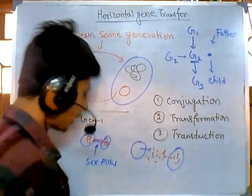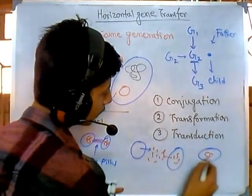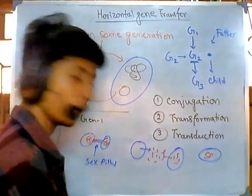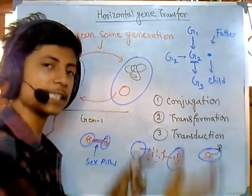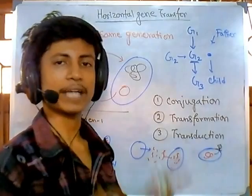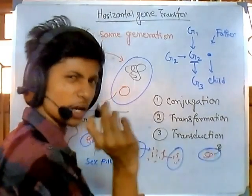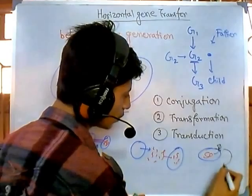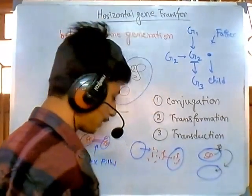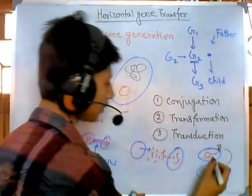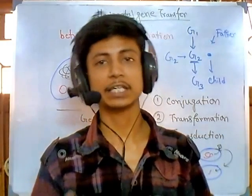The third mechanism, transduction, involves a virus. A bacterium has a gene inside and a virus — specifically called a bacteriophage because it attacks bacteria — infects that bacterium. After completing its life cycle inside, the bacteriophage picks up a section or portion of the bacterial gene. When this virus then attacks another bacterium of the same generation, it introduces that gene into the new host. This transfers the gene from bacteria one to bacteria two within the same generation.